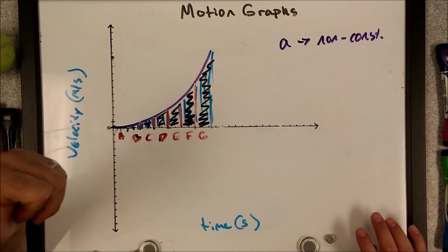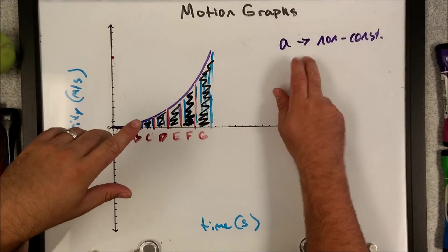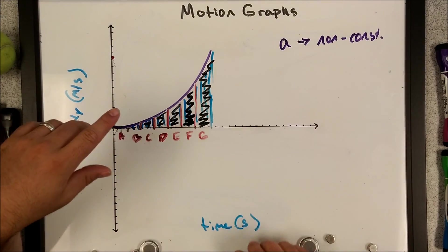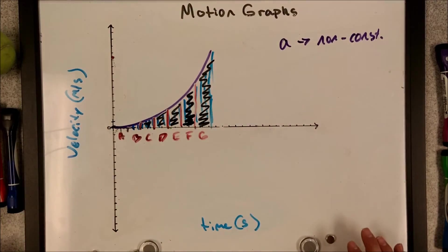Okay. Velocity time graphs. I hope you got it. Remember, recap. Slope is acceleration. Area is displacement. Cool. Thank you.